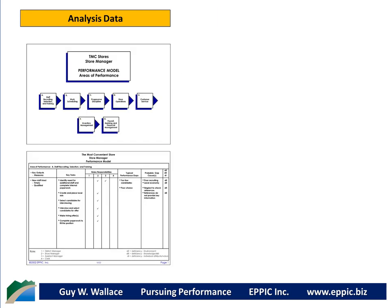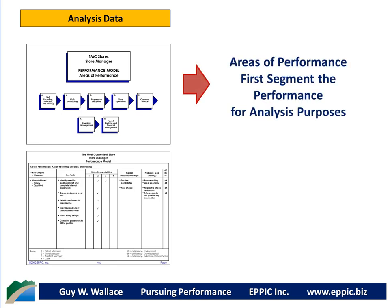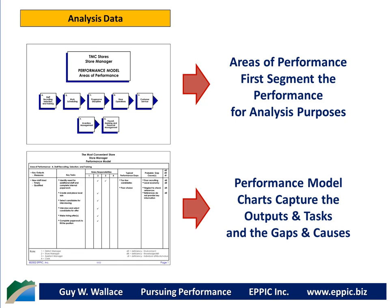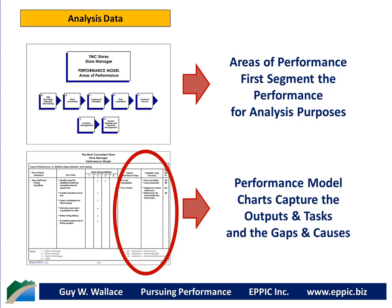Back to the analysis data of performance: the performance can be chunked into what I call areas of performance. This is also known as major duties, key responsibility areas, even Tom Gilbert's accomplishments. But each of those carried a nuanced meaning for many people, so I avoided that by just calling it areas of performance — my version of chunking the performance for further analysis purposes. Then we produce a performance model chart for each one of those areas of performance. The performance model charts capture the outputs and tasks of ideal performance, and then the gaps and causes of the real performance.